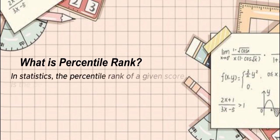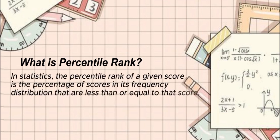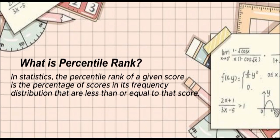What is percentile rank? In statistics, the percentile rank of a given score is the percentage of scores in its frequency distribution that are less than or equal to that score.